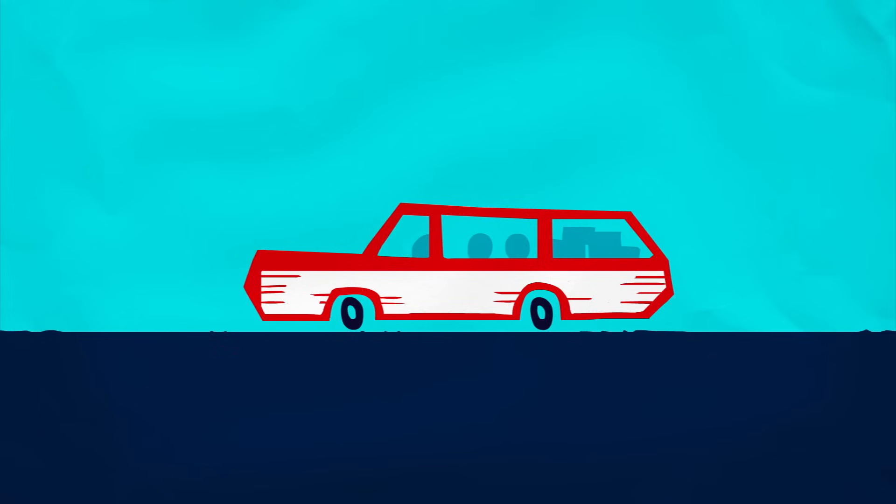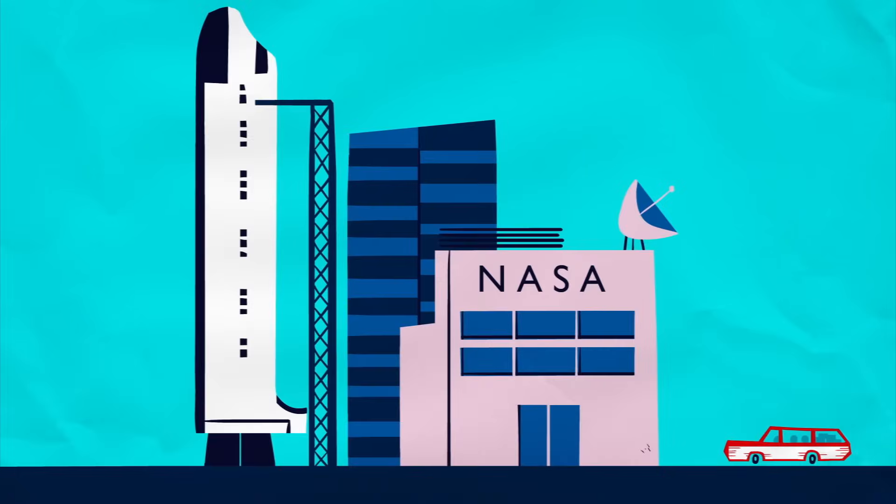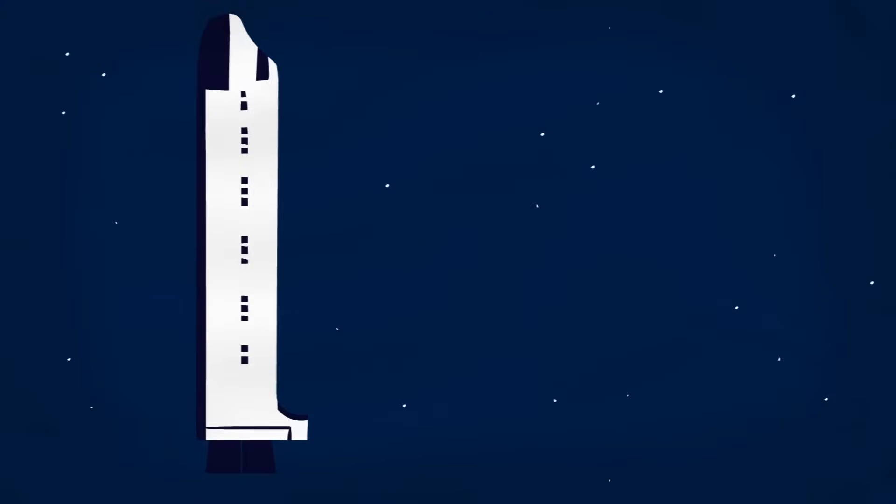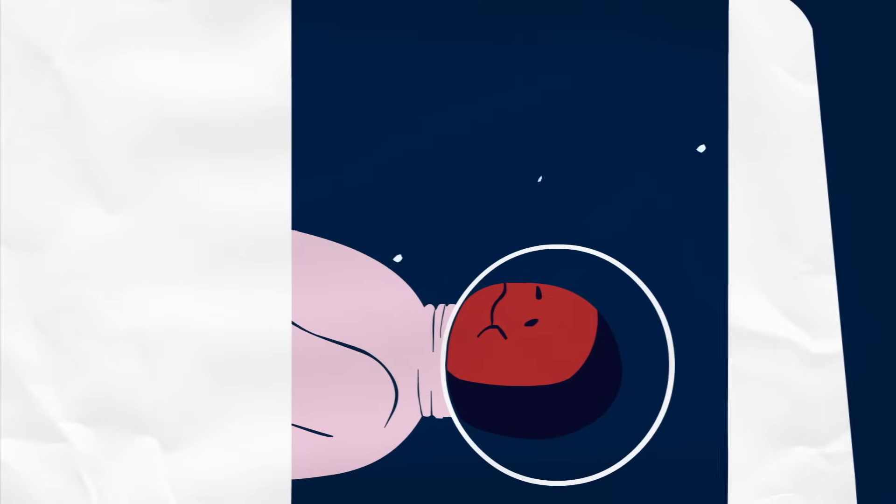And sometimes the stakes are far higher than just not being bored during a long car ride. At NASA, where astronauts are hurtled into space at 17,000 miles per hour, motion sickness is a serious problem. So in addition to researching the latest space-age technologies, NASA also spends a lot of time trying to figure out how to keep astronauts from vomiting up their carefully prepared space rations.